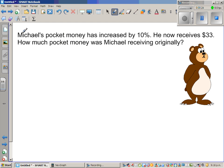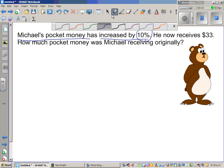So what does this mean? This sentence is crucial. Michael's pocket money has increased by 10%. This means if he was getting $100, now he is getting $110. So if his original pocket money was $100, he is getting 10% more. That means he is getting $110.